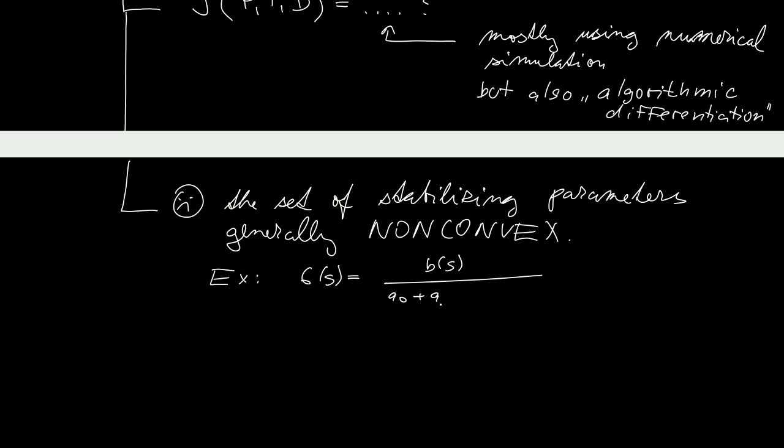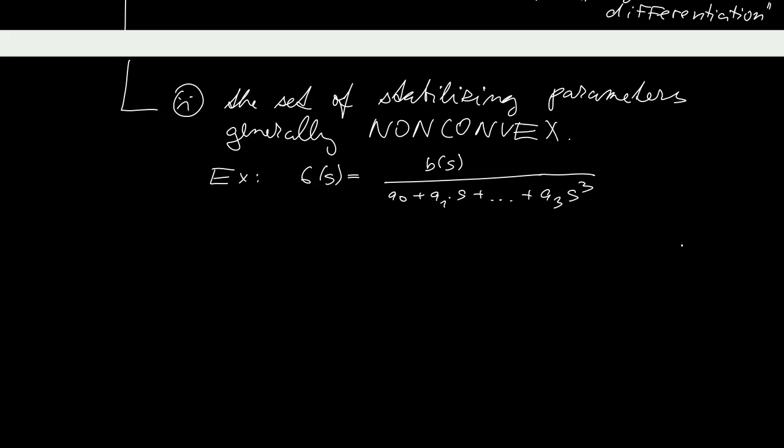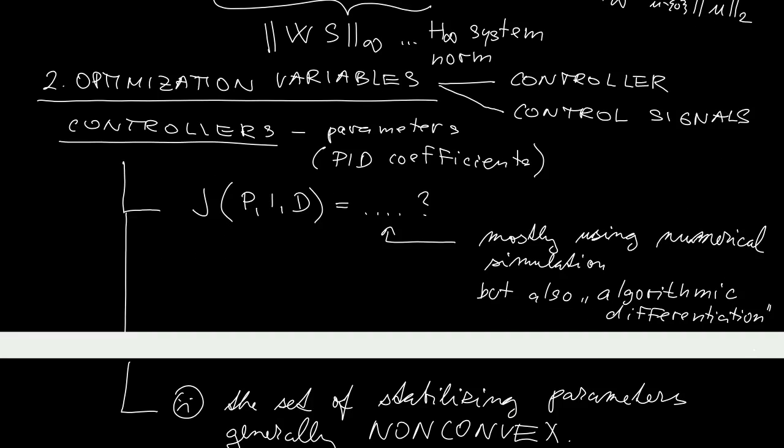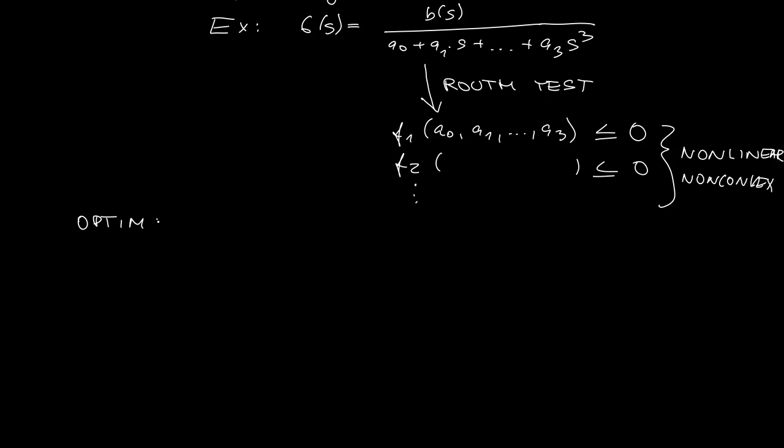Consider a linear system described by transfer function G with denominator polynomial of third degree. To check its stability, you may invoke Routh test, which will give you functions of the coefficients of the system. These functions will give you a set of inequalities. These F functions will be typically nonlinear functions of the parameters, hence these constraints will be non-convex.